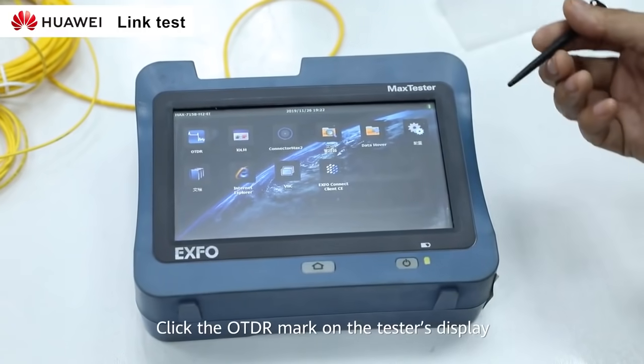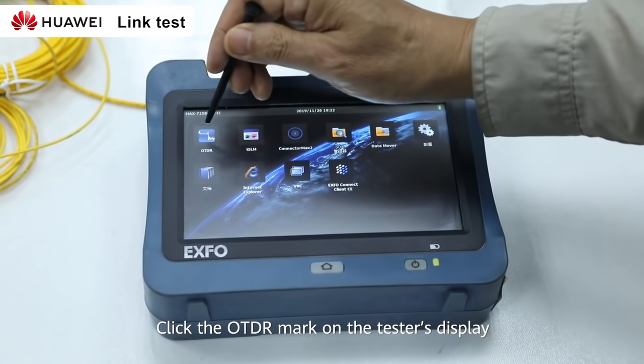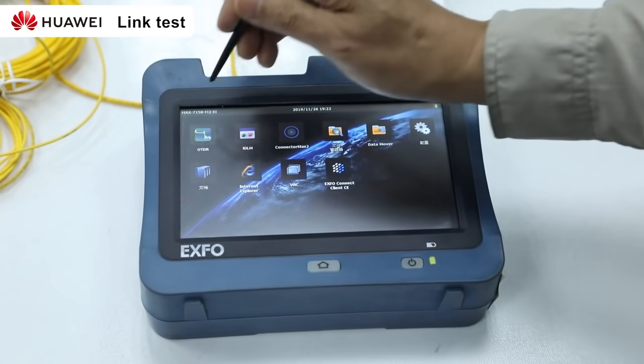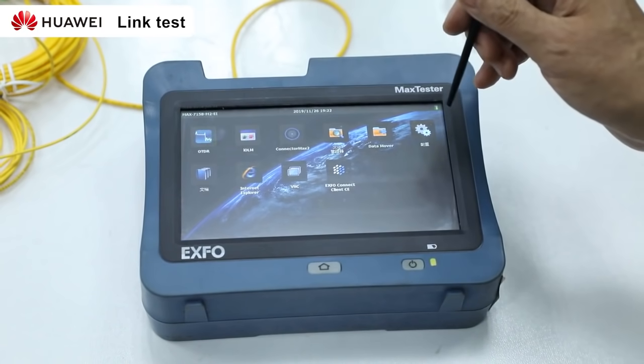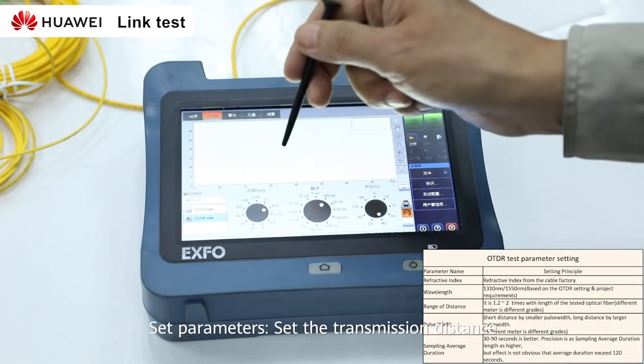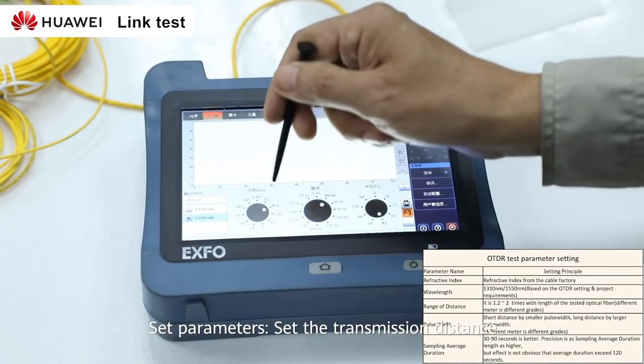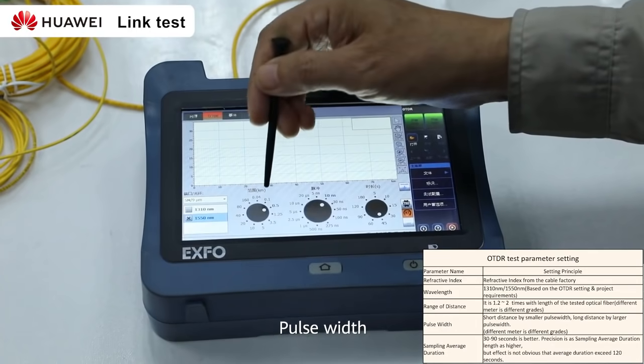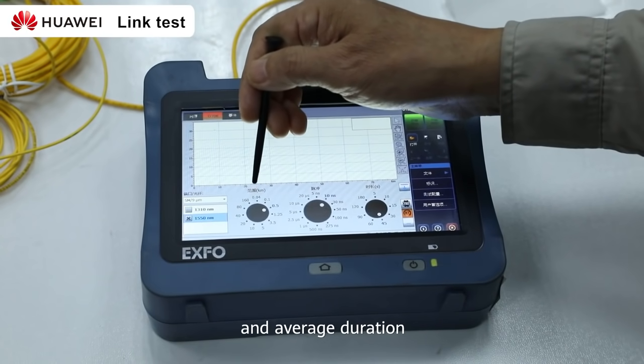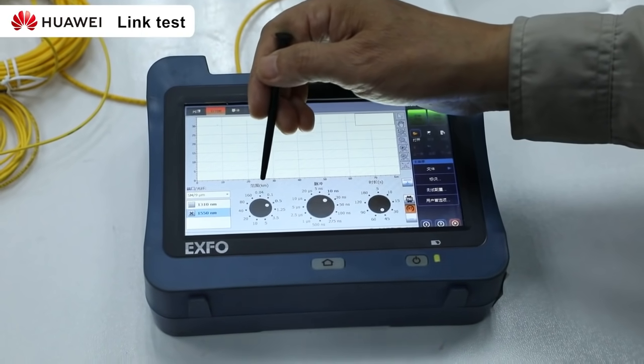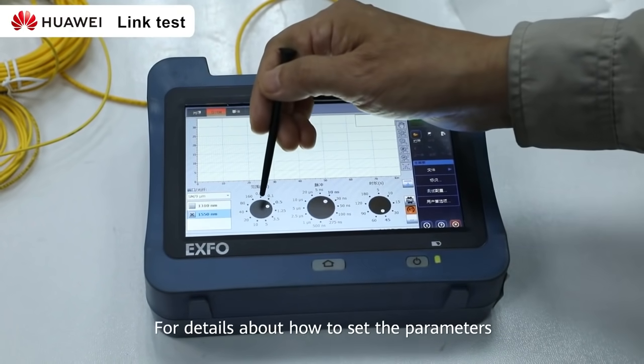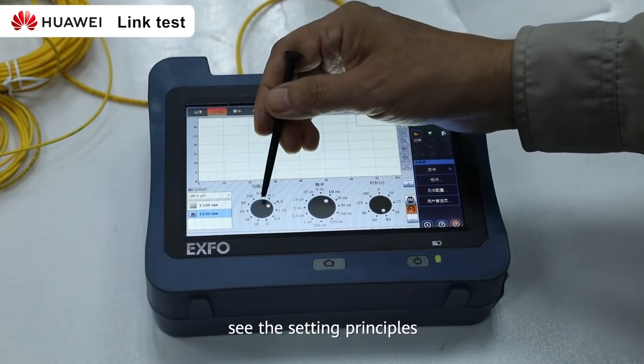Click the OTDR mark on the tester's display. Set parameters. Set the transmission distance, pulse width and average duration. For details about how to set parameters, see the setting principles.